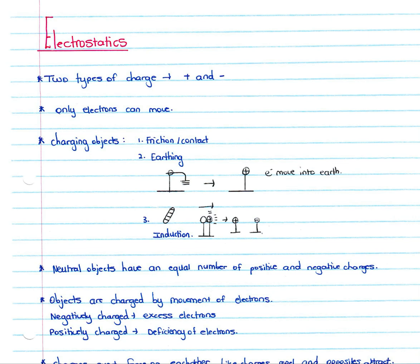First and foremost, we must know for this section that we get two types of charges: a positive charge and a negative charge. We must also know that when we have an object which has both positive and negative charges, the positive charges will never move. Only the electrons can move, so only your negative charges on your object will move or be transferred to another object.